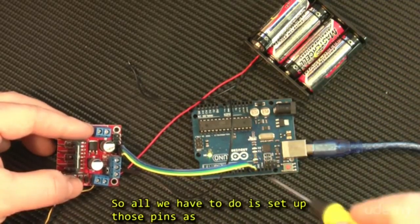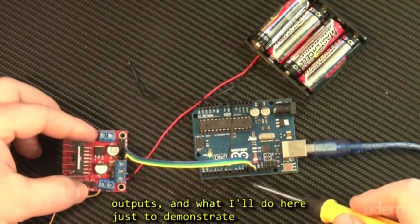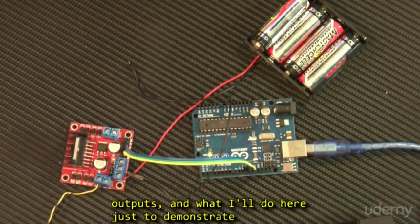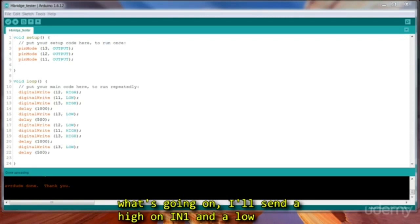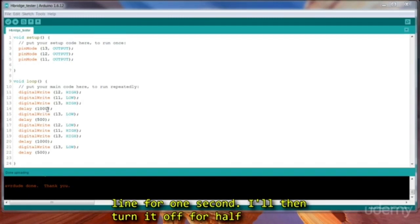So all we have to do is set up those pins as outputs, and what I'll do here, just to demonstrate what's going on, I'll send a high on IN1 and a low on IN2, and then I'll send a high on the enable line for 1 second.